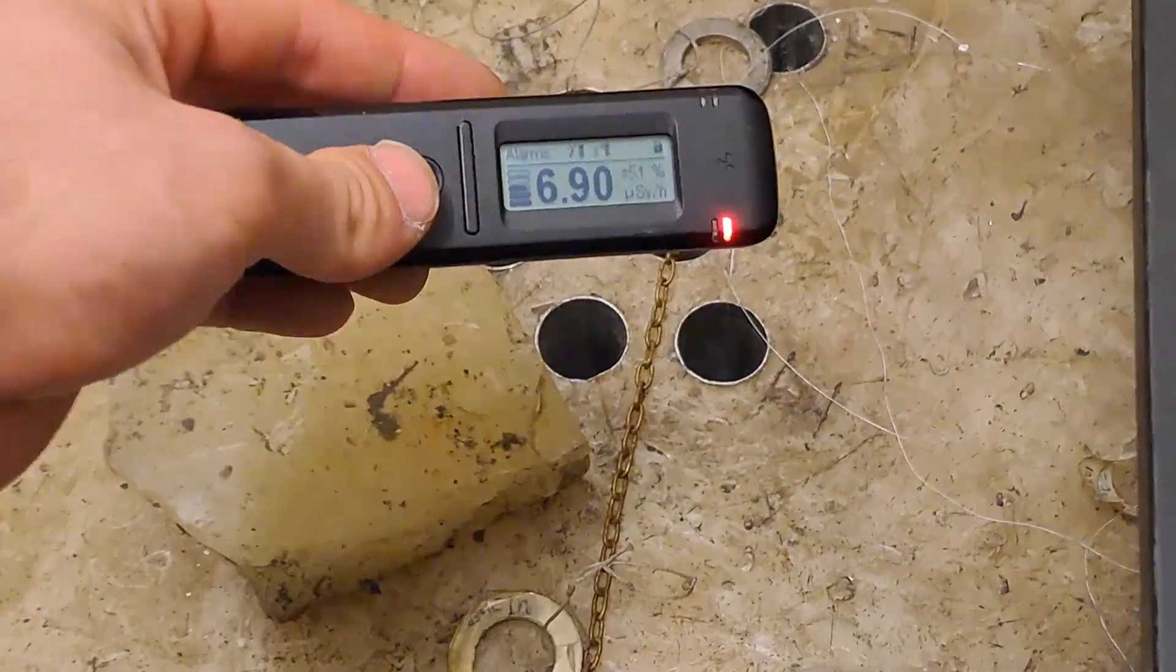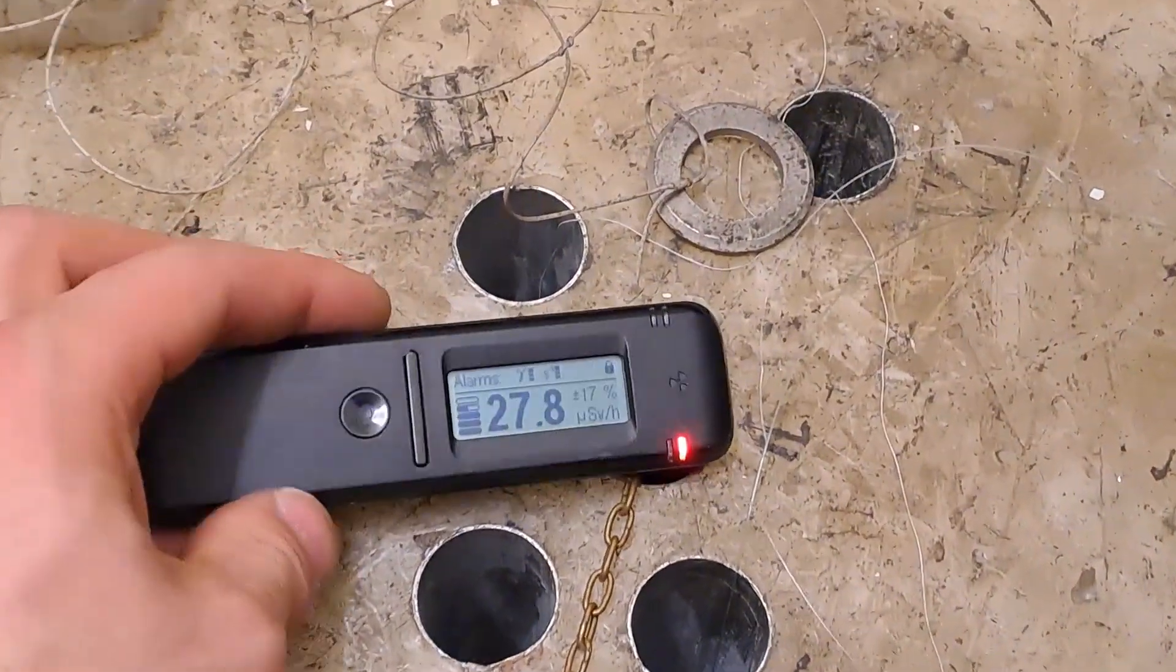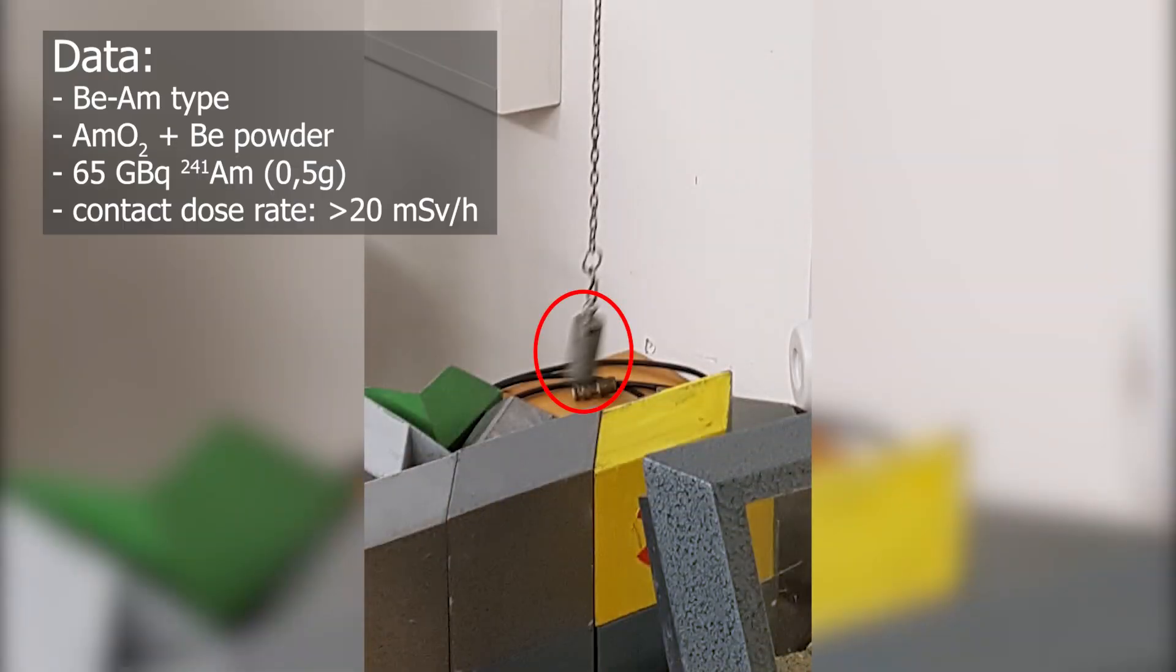So down there is our neutron source. Here is the best picture of the free neutron source during renovation work. For radiation protection reasons, it's not justifiable to pull it out entirely just for a picture. Why?